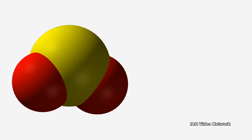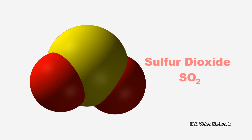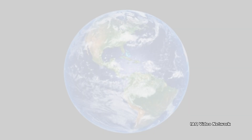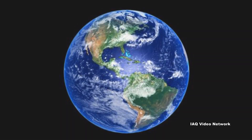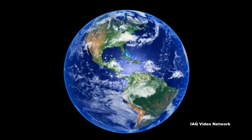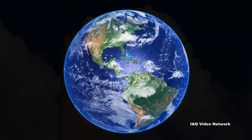Sulfur dioxide is one of a group of highly reactive gases known as oxides of sulfur. It is a colorless gas with a pungent and suffocating odor, and a common air pollutant found in many parts of the world.